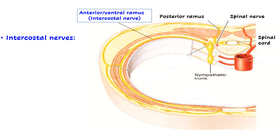The spinal nerve then divides into a posterior or dorsal ramus, which supplies the muscles and skin over the posterior aspect of the thoracic wall, and the ventral ramus, which supplies the anterolateral aspect of the thoracic wall — its skin, structures, and muscles. This anterior or ventral ramus of the thoracic nerve is known as the intercostal nerve.